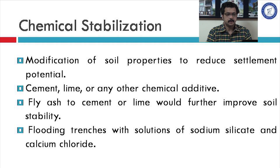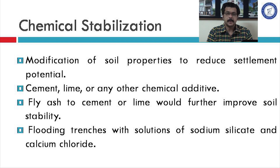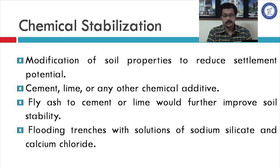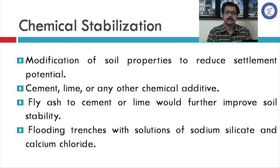The second method is chemical stabilization, where chemicals are used to modify the properties of collapsible soil to reduce its settlement potential. Cement, lime, or other suitable chemical additives can be used; fly ash added to cement or lime also improves and stabilizes soil characteristics. Additionally, trenches can be flooded with chemical solutions such as sodium silicate and calcium fluoride, ensuring the solutions reach the depth up to which soil improvement is expected.